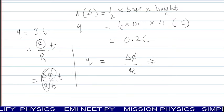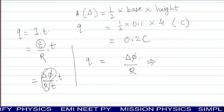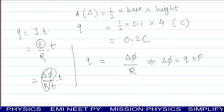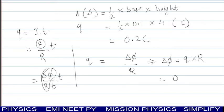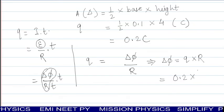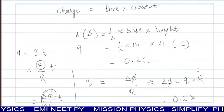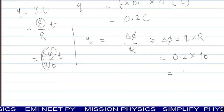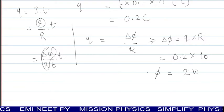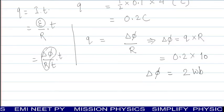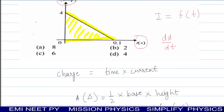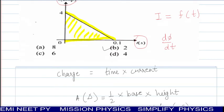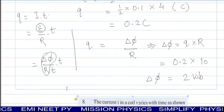If you have doubt here, now you have to find change of flux. Change of flux equals charge into resistance. Putting values 0.2, and check value of resistance - resistance of coil is 10 ohm. This will equal 2, and unit of change in flux is Weber. Check option number - this will be option number B.